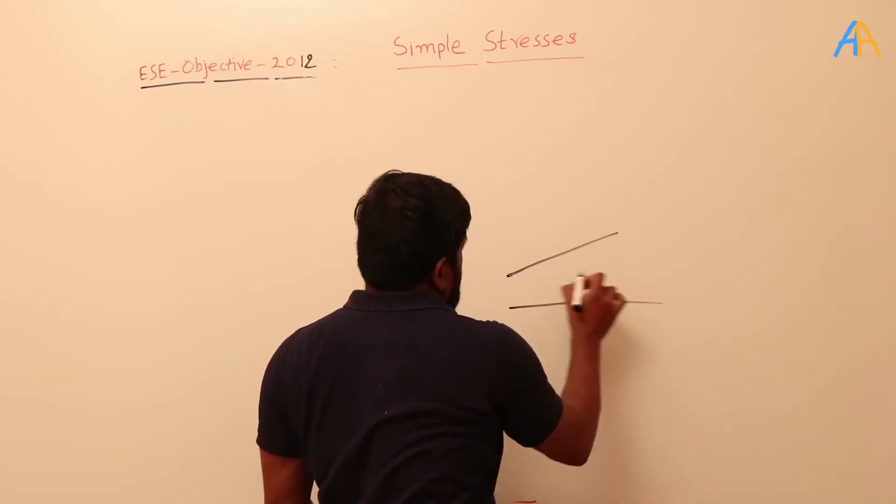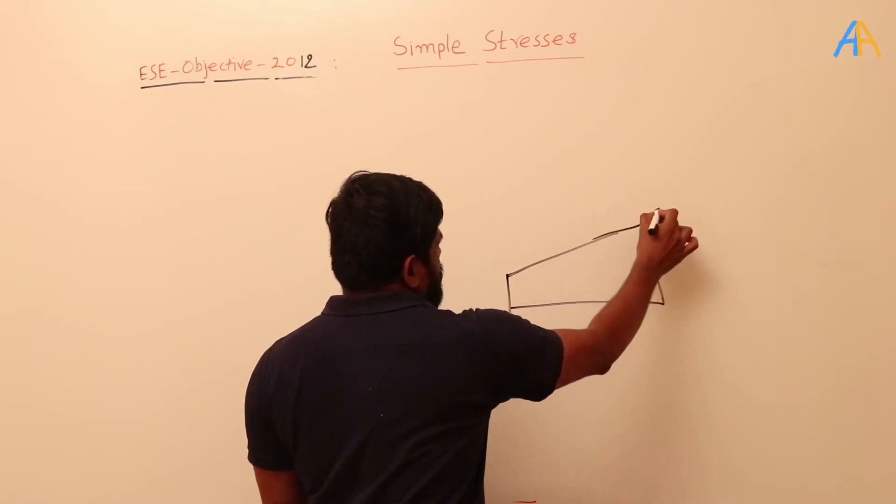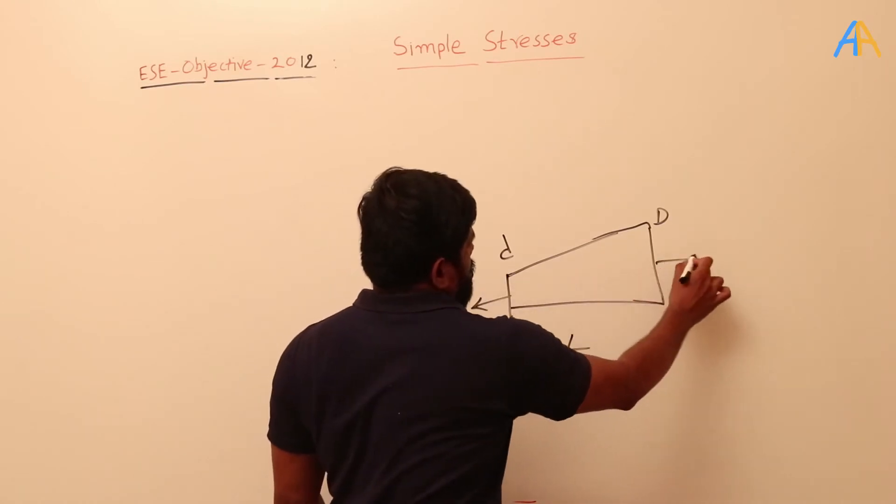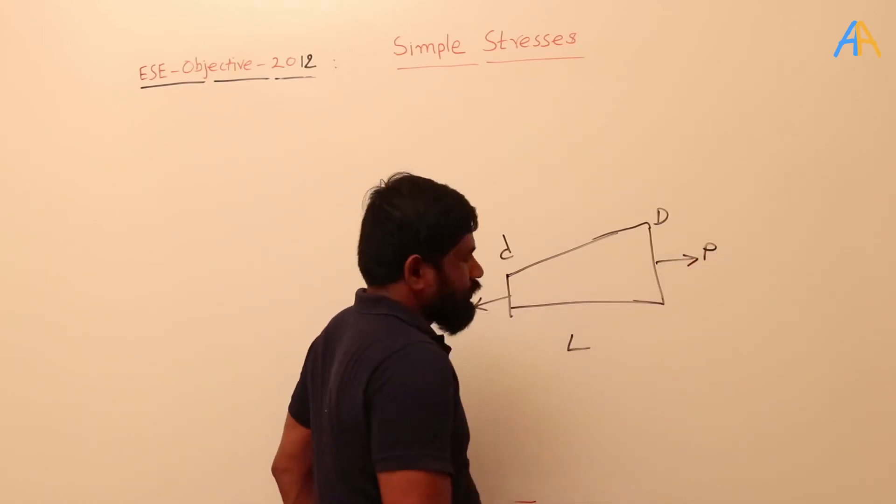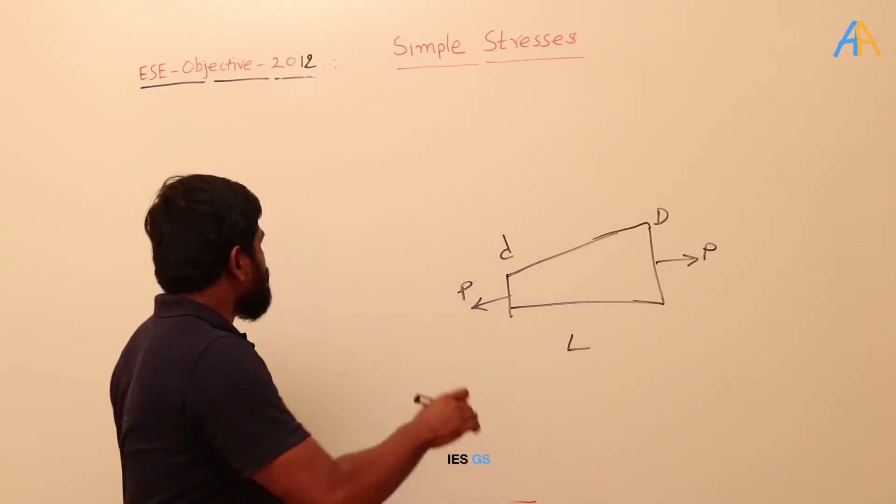So this is the tapered body. This is the capital D and this is the small d length, and it is subjected to the axial pull P. So here we already derived this.